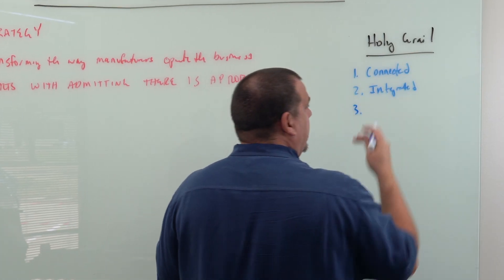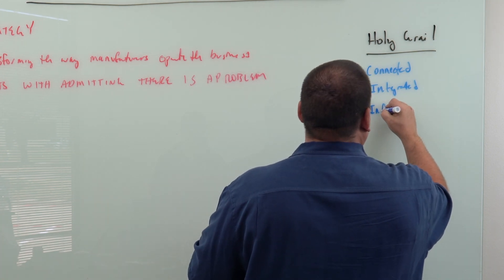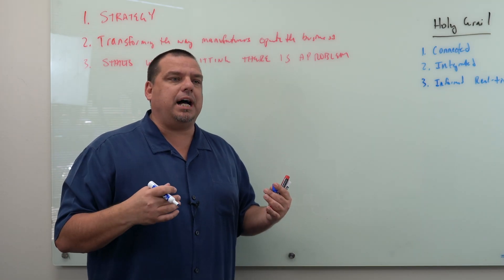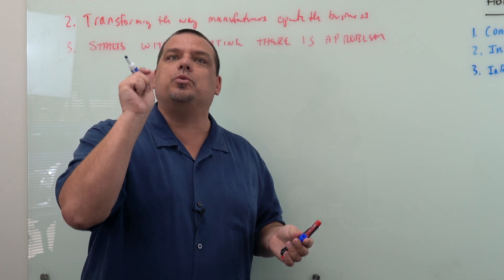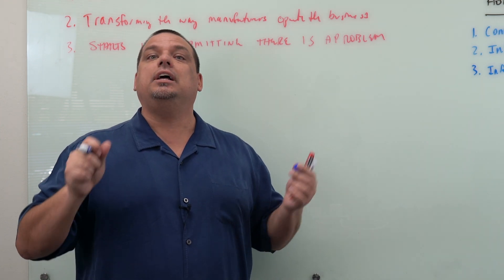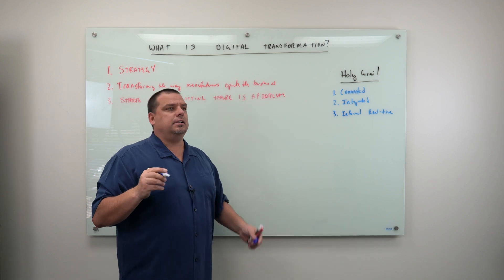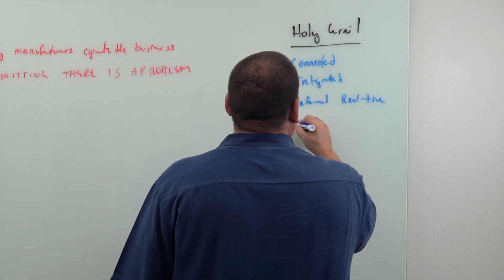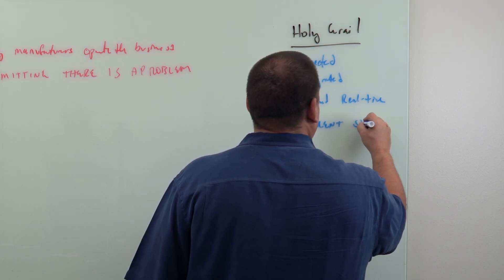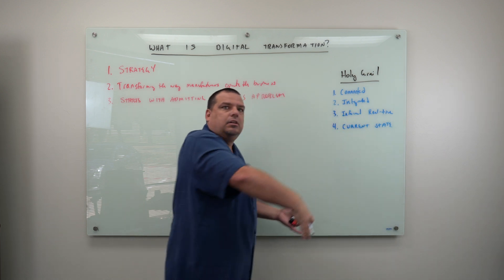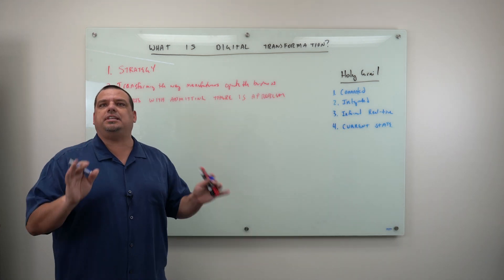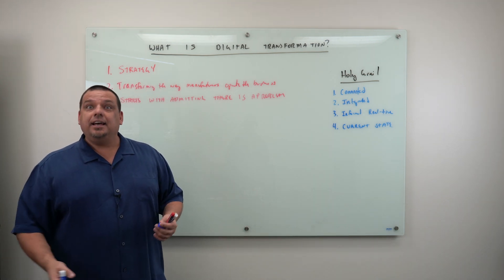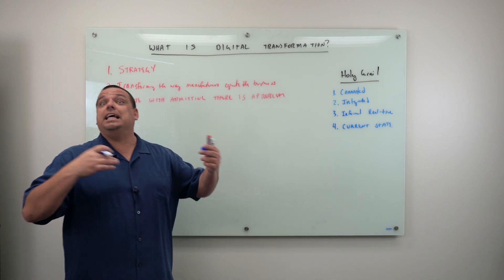A holy grail manufacturer is informed in real-time. That means I know what my actual costs are at this moment, my actual revenue at this moment, and the reasons I'm behind schedule at this moment — you have the ability to influence it. Number four, everyone knows the current state of the business. All the stakeholders know whether today is a good day, this hour is a good hour.